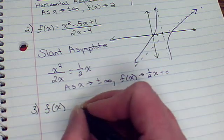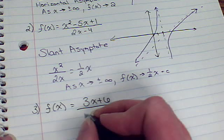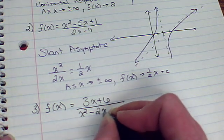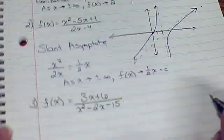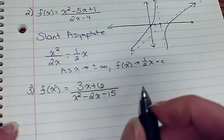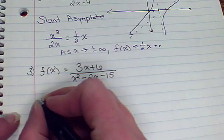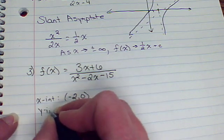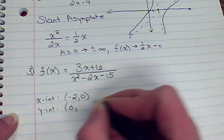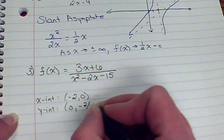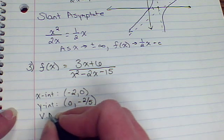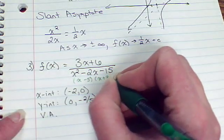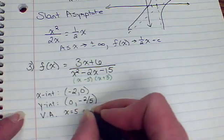See what happens on our last example. Oh, this one looks like it can factor. So we might be able to find out a lot about this one. Let's try to make our list again. x-intercept when the numerator is 0. So that's going to be negative 2. y-intercept is when x is 0. 6 divided by negative 15 is going to be 2 fifths. Vertical asymptote occurs when the denominator is 0. So on this one, I might want to factor it. x minus 5, x plus 3. Looks like I'm going to have two vertical asymptotes. One at 5 and one at negative 3.